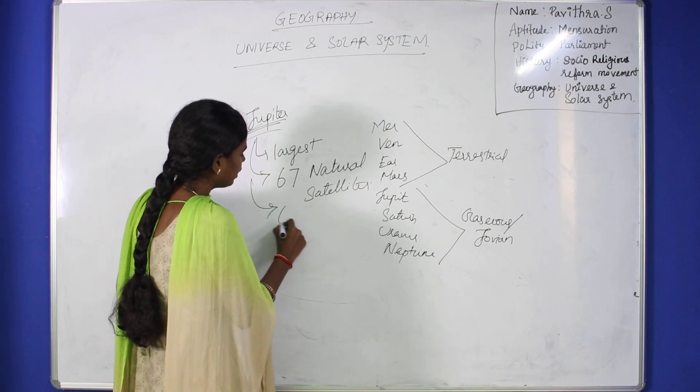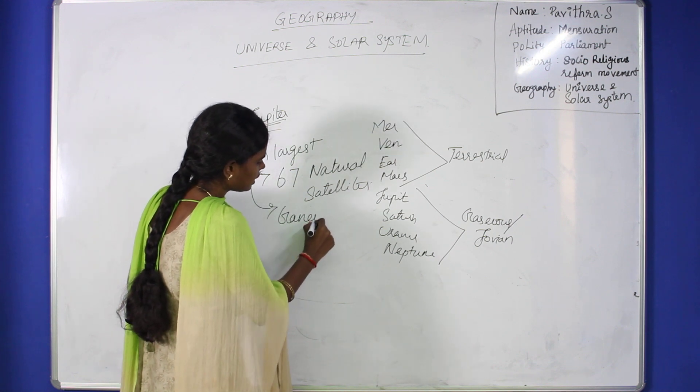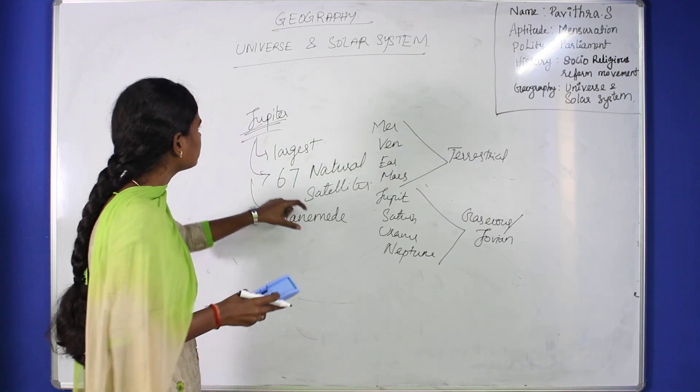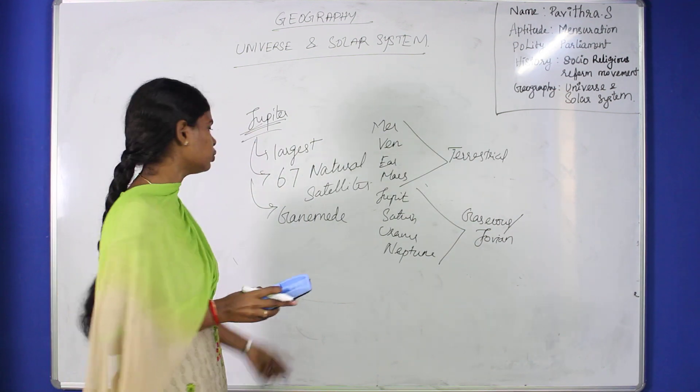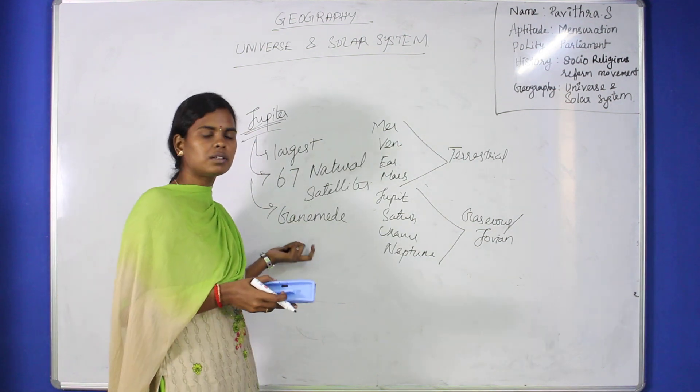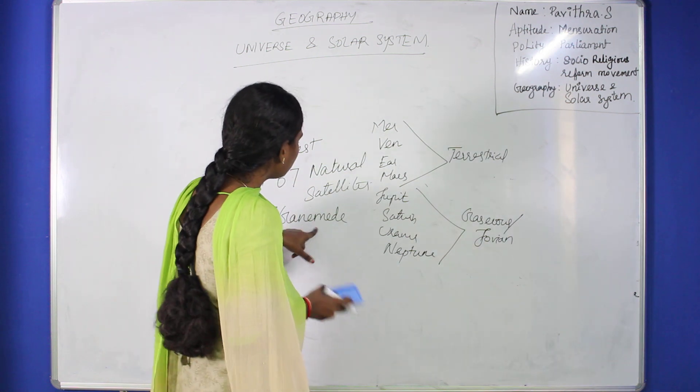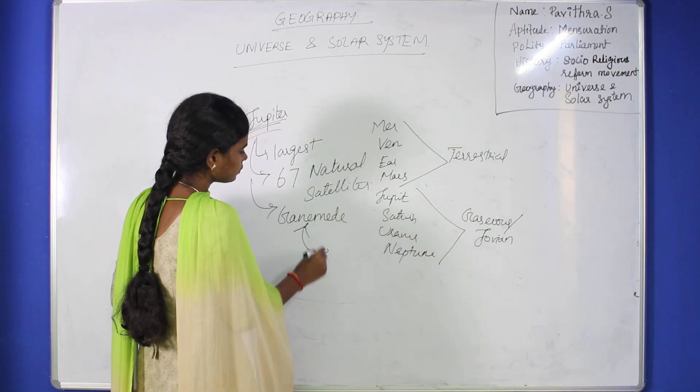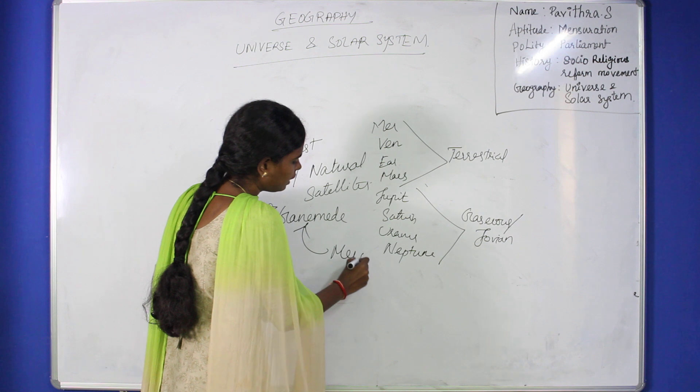Ganymede is the largest satellite of Jupiter. Ganymede is also the largest satellite in the entire solar system, even larger than the planet Mercury.